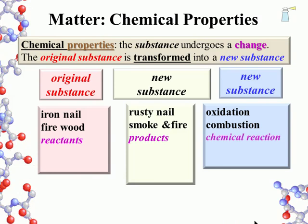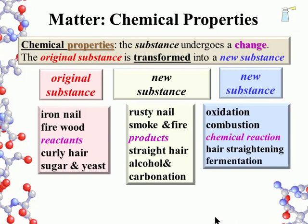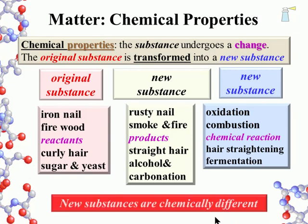We can generalize this changing process by calling any original substance a reactant, and any new substance following a transition the product or products — terms used to describe a chemical reaction. Chemical reactions are a big part of studying chemistry. Another example is curly hair being made into straight hair — hair straightening. The last example is sugar and yeast, which combine under the proper conditions to generate alcohol and carbonation; this process is called fermentation. The take-home lesson: new substances are chemically different from the original substance.